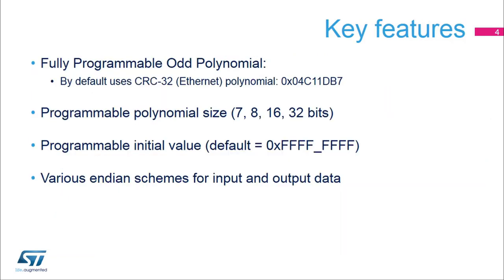The CRC peripheral integrated in the STM32 features a fully programmable odd-value polynomial with a programmable size of 7, 8, 16, or 32 bits. The initial value is also fully programmable, allowing for very flexible runtime CRC code generation. The peripheral can be configured to support the big or little endian formats of the input and output data for support of various communication protocols.